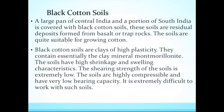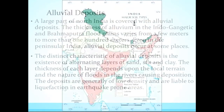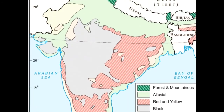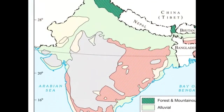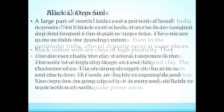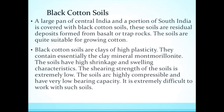Black cotton soil covers a large part of Central India and a portion of South India. These soils are residual deposits from basalt or trap rocks. The soils are quite suitable for growing cotton. On the diagram, black cotton soil is visible in the gray-black colored regions of Central India.